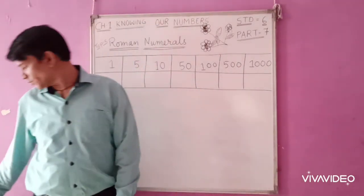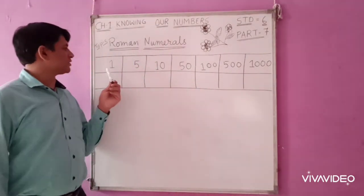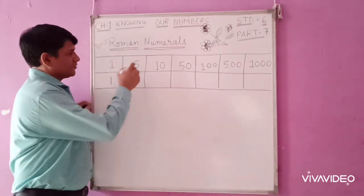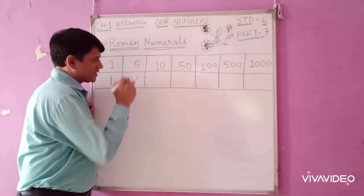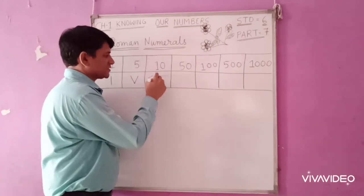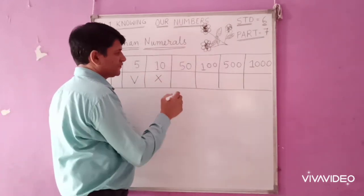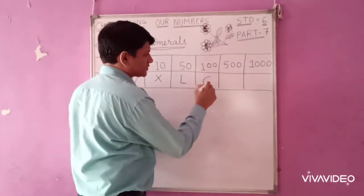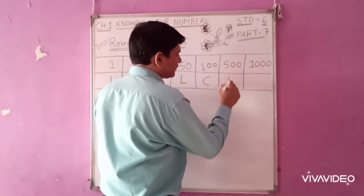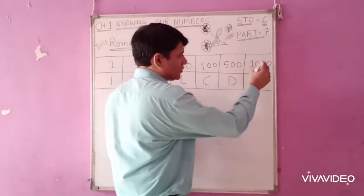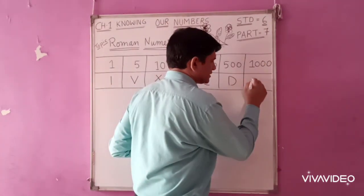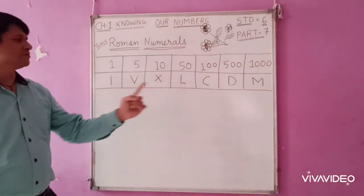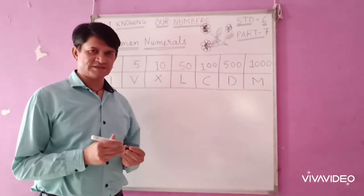What are the symbols for Roman numerals? 1 is written as I. 5 stands for V. 10 stands for X. 50 stands for L. 100 stands for C. 500 is D. 1000 is M. These are the symbols related to Roman numerals.